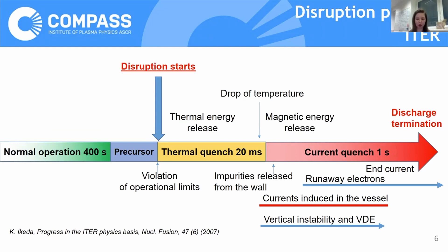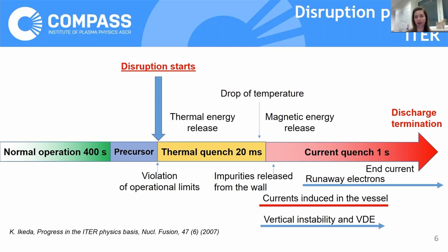At this moment, temperature drops. The temperature drop is followed by a resistivity increase. To keep plasma current, we will need to increase loop voltage. But present transformers cannot raise the loop voltage high enough to maintain the plasma current they are losing. So we come to current quench — the sudden loss of plasma current — which is accompanied by formation of runaway electrons, induction of currents in the vessel, and movement of the plasma towards the wall. And this is disruption.